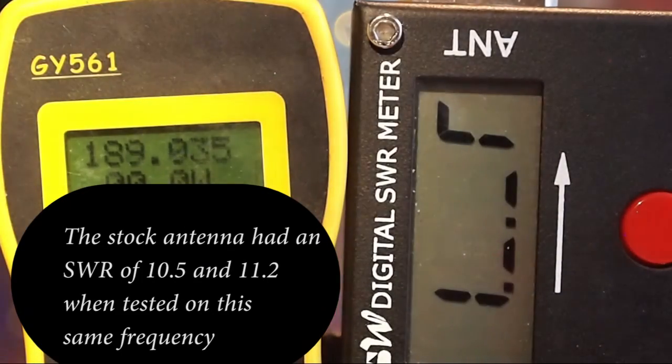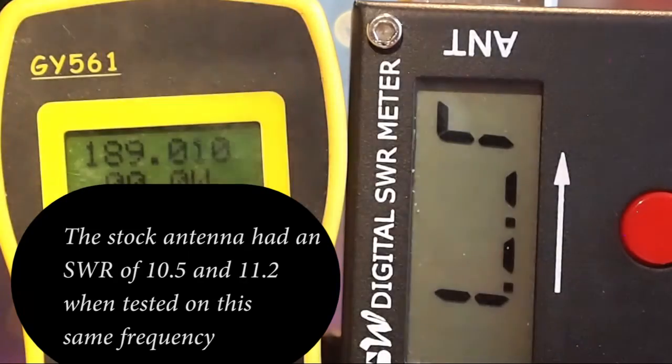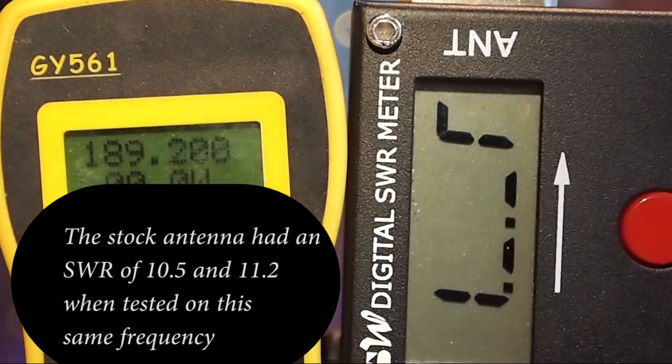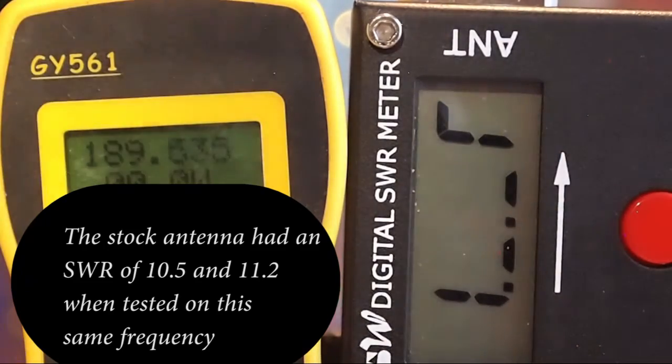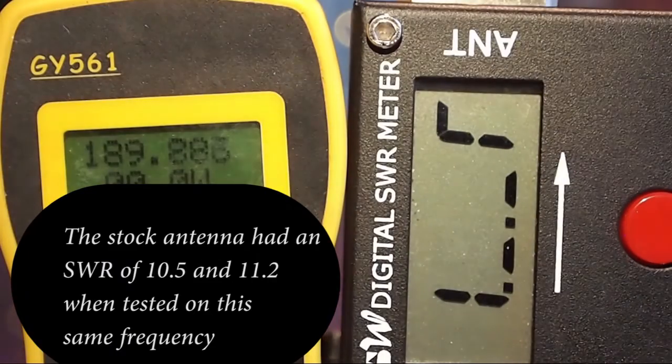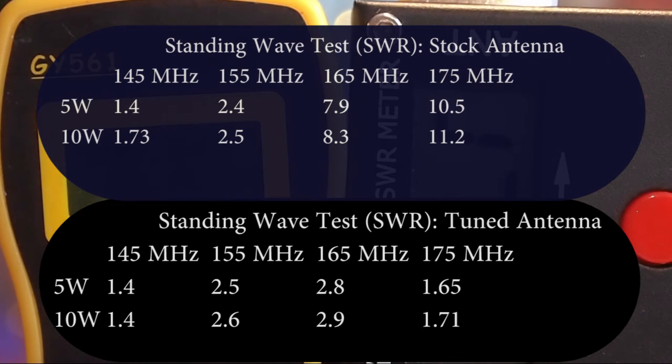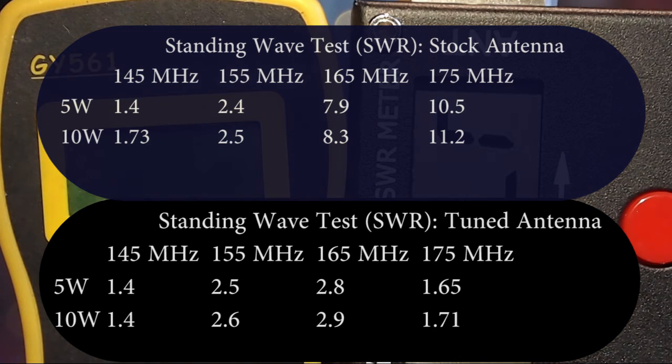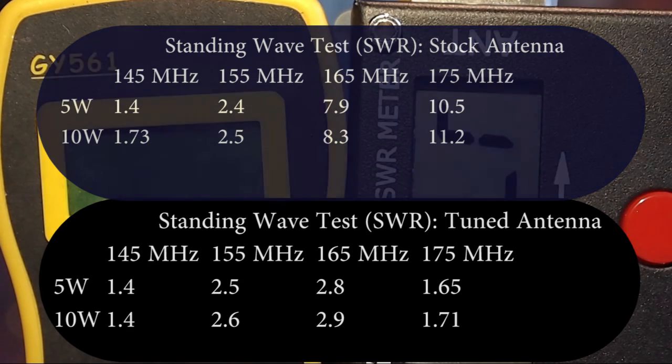Thus we're going to move up to 175 MHz. And you'll note that on the frequency counter the TC-3000A does not transmit at 175 MHz. It goes to 174 MHz so that's what we're actually going to be on. And 1.65 on low power for that. 1.71 on high power. Now if we go back to the stock antenna, you'll recall that the standing wave was 10.5 on low and 11.2 on high. A huge, huge difference between using a stock antenna and a tuned antenna when you move above 155 MHz. It is a no-brainer at that stage.